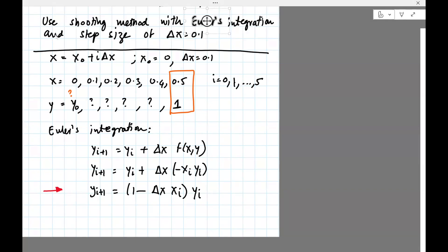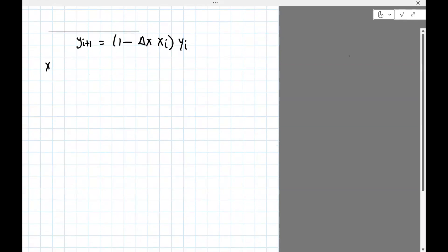Let me just use that. So let's start using the Euler's integration formula. So I'll copy this. So let's start with i equals 0. Here xi is, x0 is 0. And yi is, y0 is, well, that's an unknown. So let's just keep it as it is. So we have y1 equals 1 minus, and of course delta x is 0.1. So 0.1 times 0 times y0. So we have y1 equals y0.